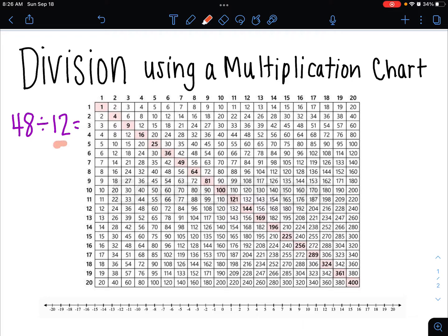So if we look at the second number, this 12, we can follow that over until we get to 48. Then we look all the way up to the top, and that number 4 is right there. So 48 divided by 12 is actually 4.